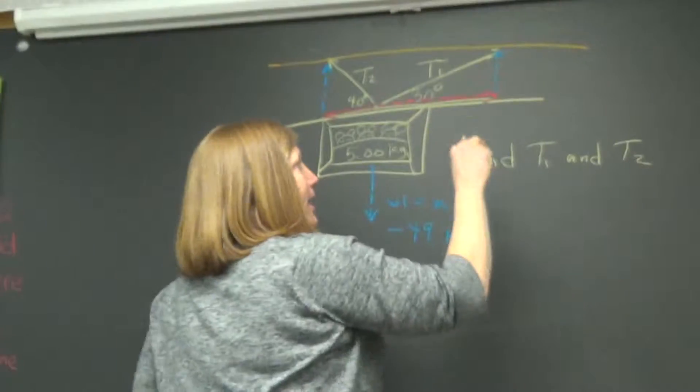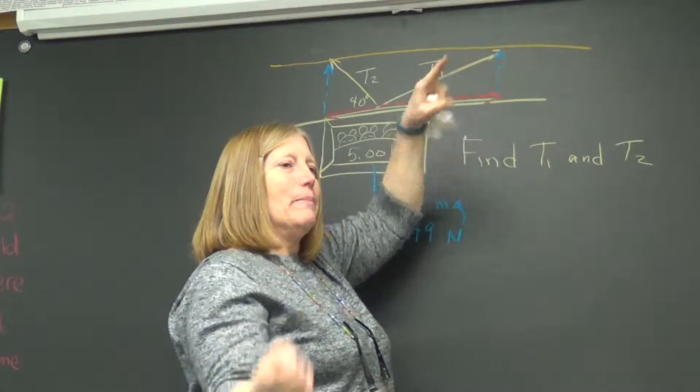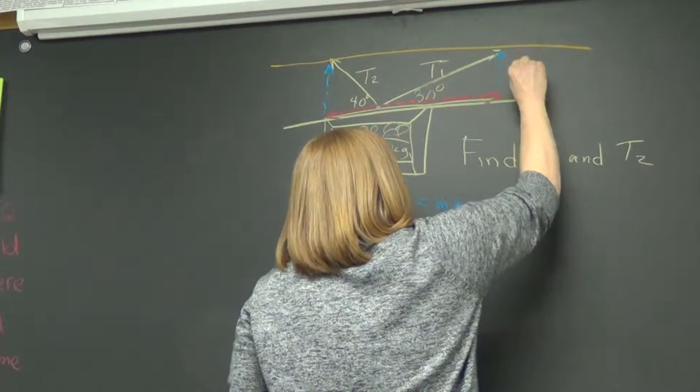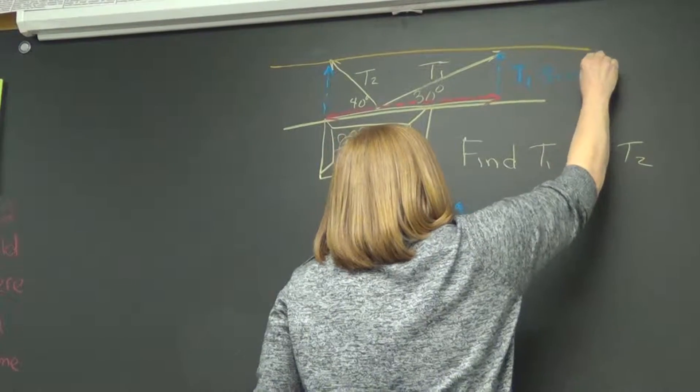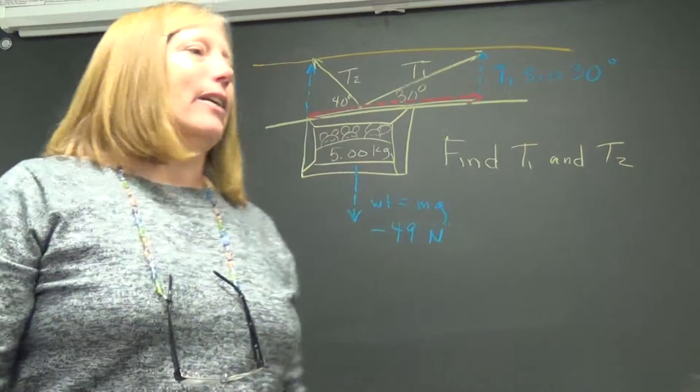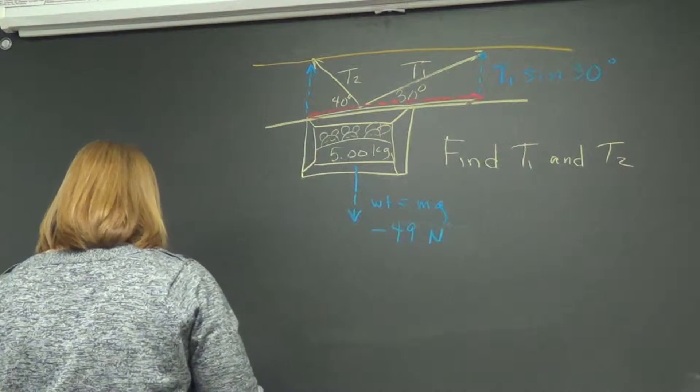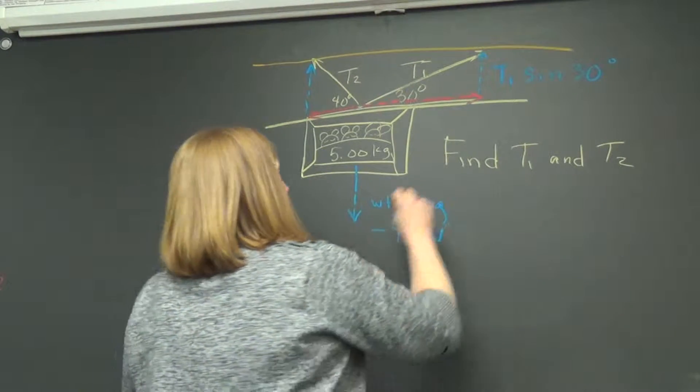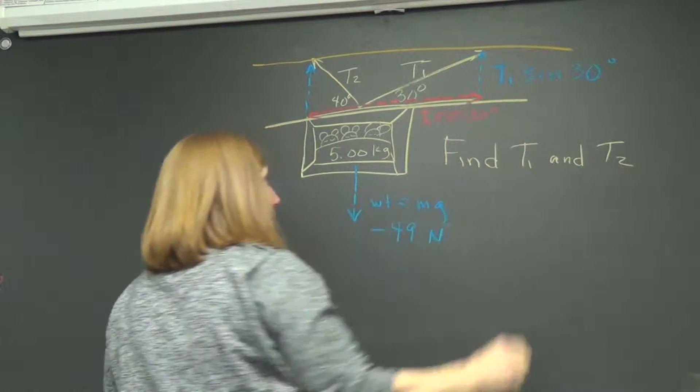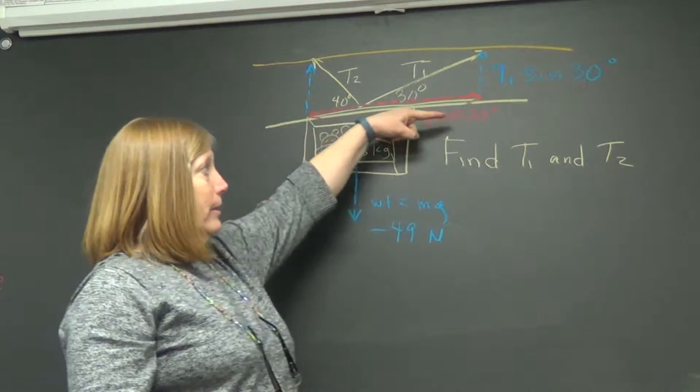So remember we learned previously to get this x component, I mean sorry, this y blue component. You can look back to your old modules. This is always going to be hypotenuse, which is T1 times the sine of 30. And trig gets us there and we saw why that was earlier in the year. What about the red one then on this T1? T1 cosine 30. So that's the value of the red one for T1 and the blue one for T1. Horizontal and vertical.